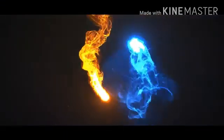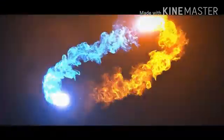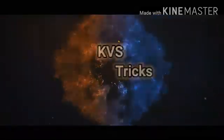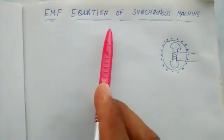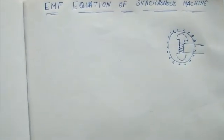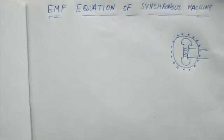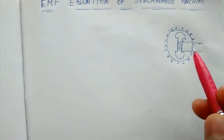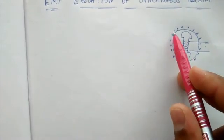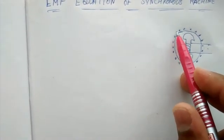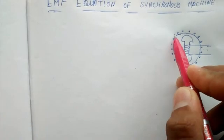Let's start our video. EMF Equation of a Synchronous Machine. We have EMF produced in a synchronous machine. First, we have an excitation of the field, and we have a flux produced, and we have that flux linking the armature conductors, and we have some EMF induced.